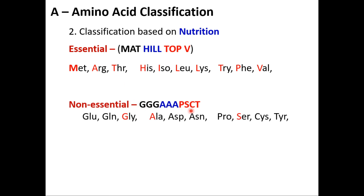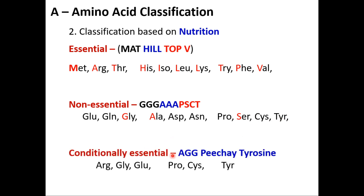Non-essential amino acids use the mnemonic: Triple G, Triple A, PSCT. Triple G = glutamine, glutamic acid, glycine; Triple A = alanine, aspartate, asparagine; P = proline; S = serine; C = cysteine; T = tyrosine. Conditionally essential amino acids are non-essential under normal conditions but become essential in certain disease conditions. These include: arginine, proline, cysteine, and tyrosine.